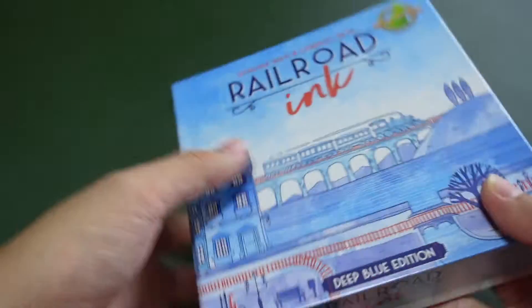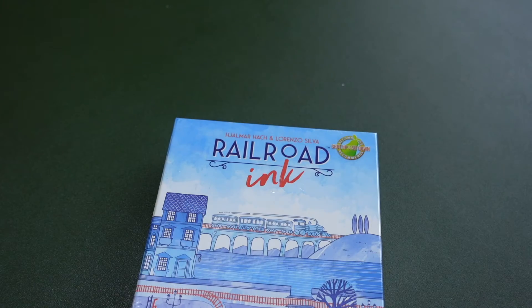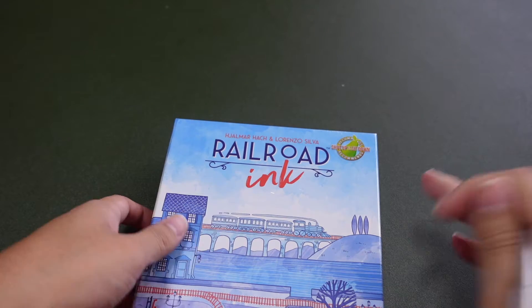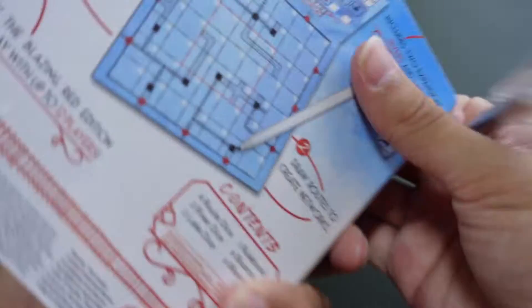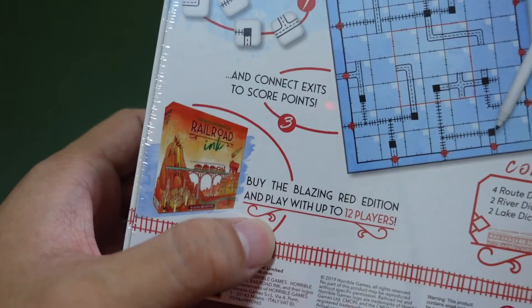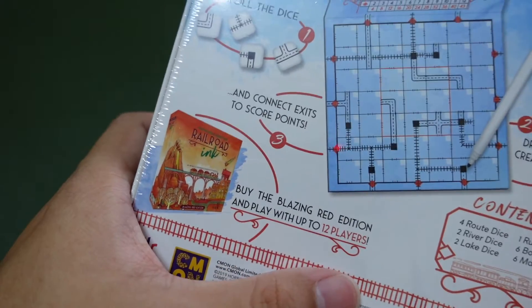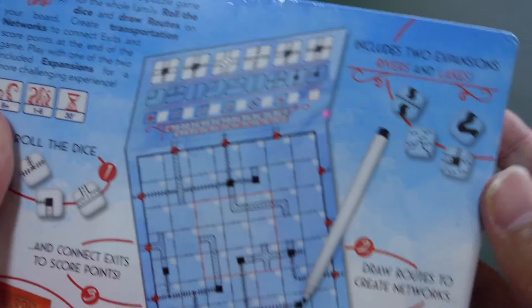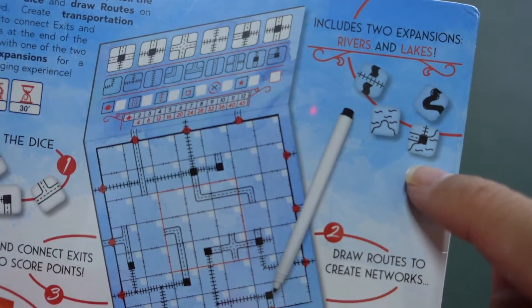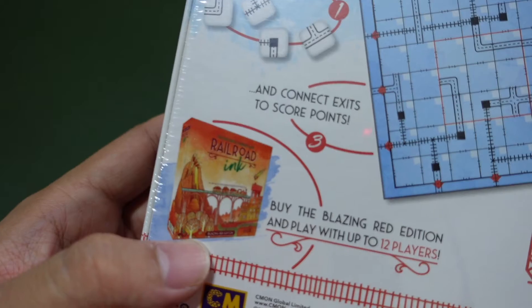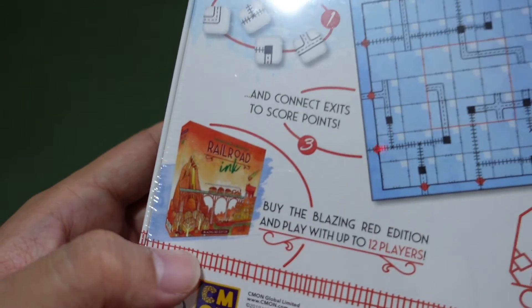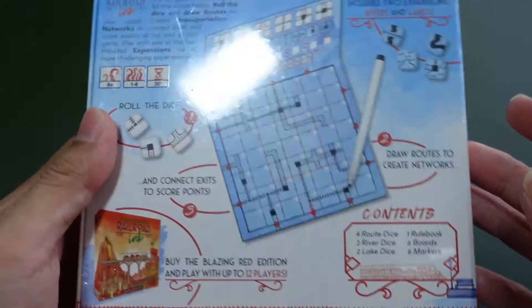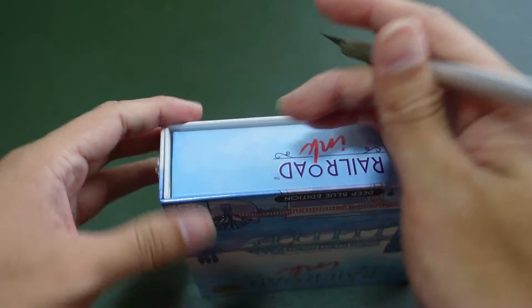Let's start unboxing this. There's also a Blazing Red version. This one can play up to 12 players. What's different are the dice - this one has rivers and lakes, while the red one has meteors and volcanoes.